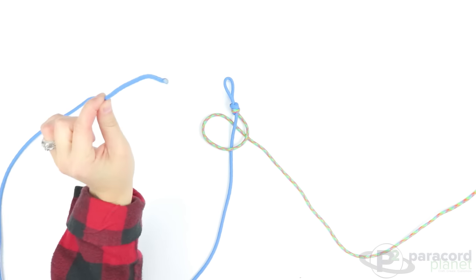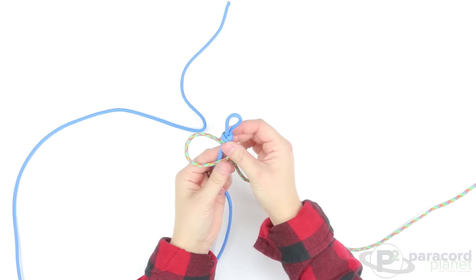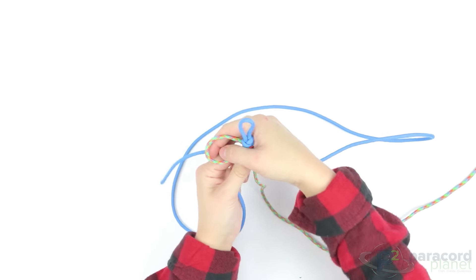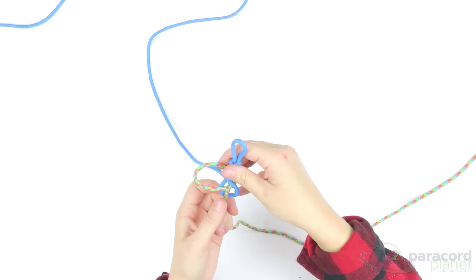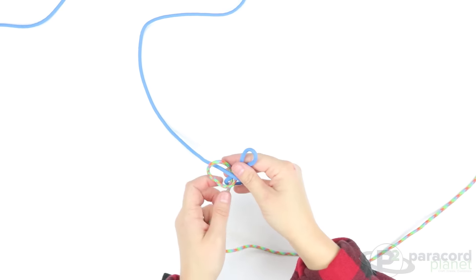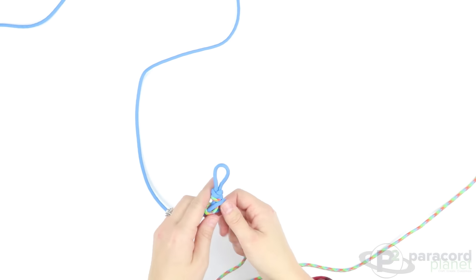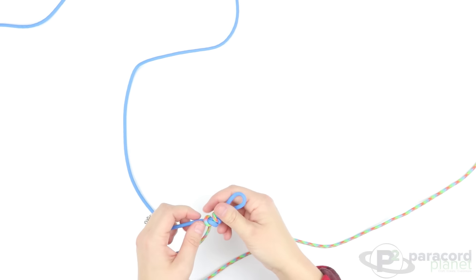That's your loop now. Take your cord on the left, go behind and down through the loop. Push it up towards your other knots.